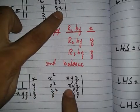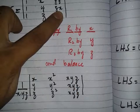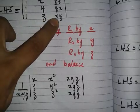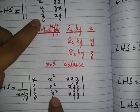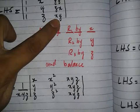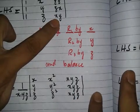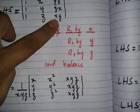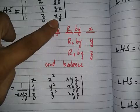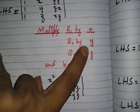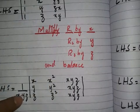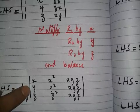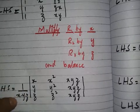After arranging, the z-x term becomes xyz. Then by multiplying row three by z, we get z-squared and xyz. Wherever we multiply a row, we must balance the determinant — so since we multiplied rows by x, y, and z, we must divide outside the determinant by xyz to restore balance.